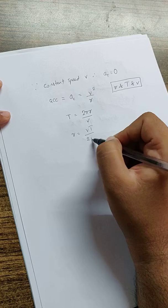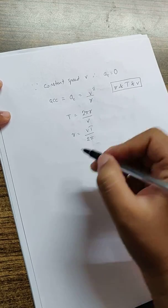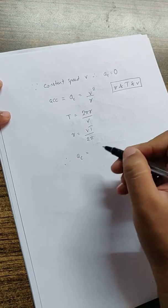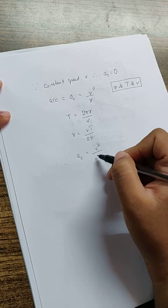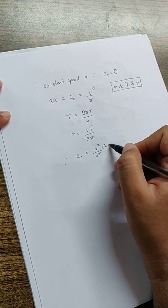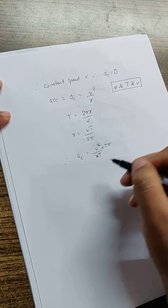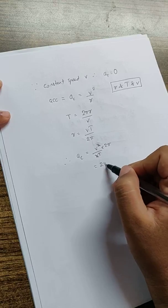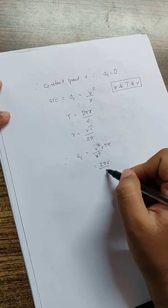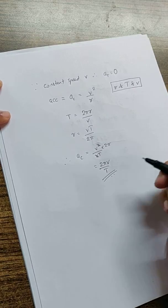I get the centripetal acceleration as V squared by VT times 2π. That cancels one V, which makes the formula 2πV by T, and that is one of the options given.